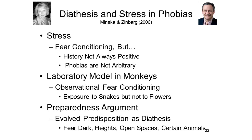Perhaps in much the same way that rhesus monkeys are prepared to acquire a fear of snakes, we humans have been prepared by our evolution to acquire fear of the dark, fear of heights, fear of open spaces, and fear of certain animals, with very little direct exposure — maybe none, just vicarious exposure. In this case, the learning experience, whether direct or vicarious, serves as the stress element in diathesis stress theory. But the evolved predisposition to become afraid of things like dark and height and open spaces and snakes and spiders functions as a kind of diathesis. It sets the stage and renders us vulnerable to acquiring these fear responses, including the pathological fears that constitute our phobias.